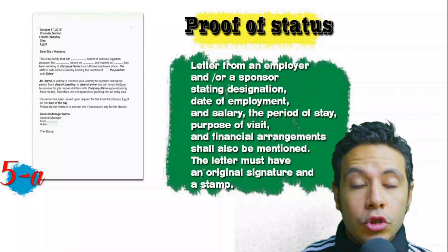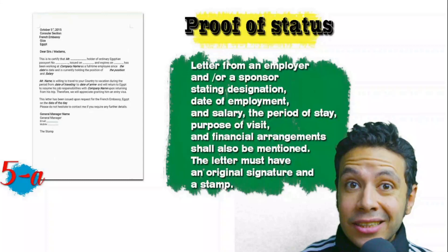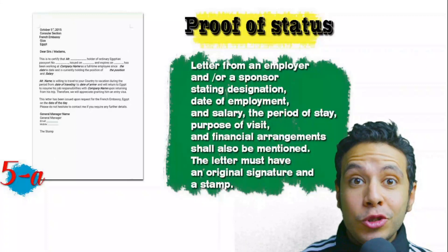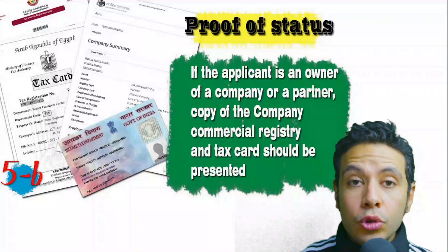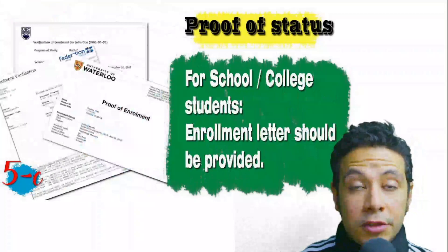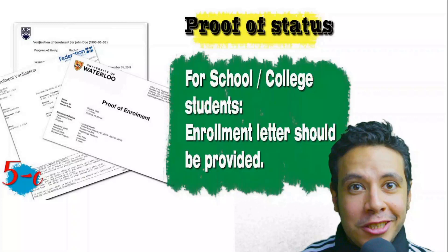In most visa application processes you will be required to provide a proof of status. If you are an employee, provide a letter from your employer or HR department mentioning your name, work details, and salary, with both address and contact numbers. All letters must have an original signature and a stamp. If you are a business owner, present your commercial registry and tax card. If you are a student, an enrollment letter from your university or school should be provided.